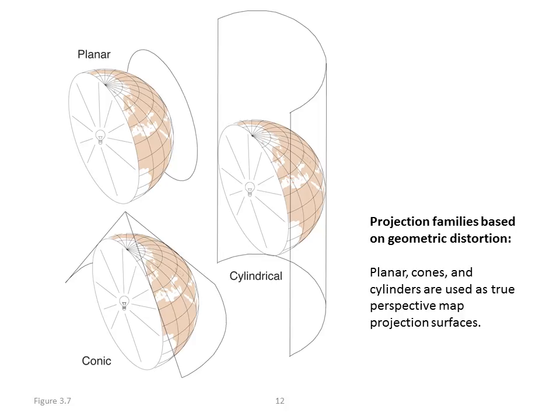A conic map is a good choice for drawing a mid-latitude location, where the goal is to have a map that represents areas as being close to what they are in reality on the Earth's surface.